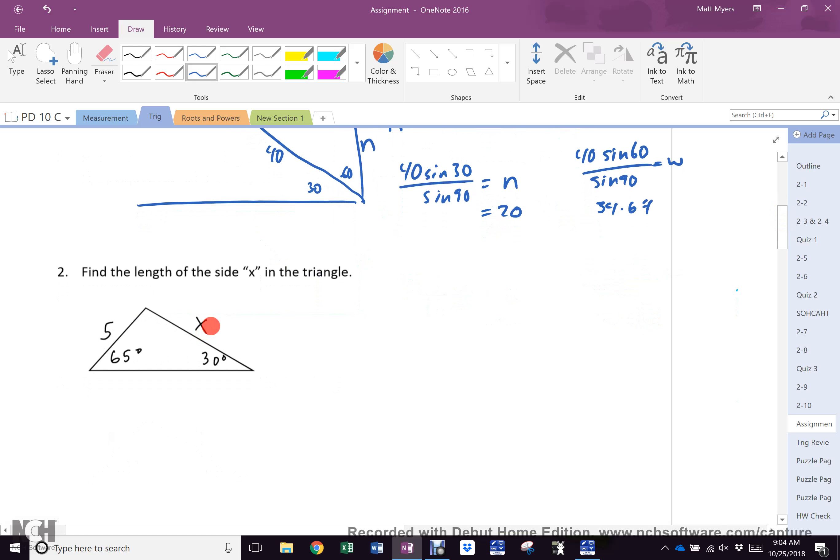Find the length of x, since I have a pair there. It's sine law. I'll change order just to show you it works both ways. Sine 30 equals x over sine 65. Multiply the pair, divide the spare. 5 sine 65 over sine 30 equals x, which equals 9.1.